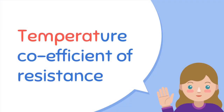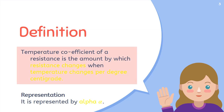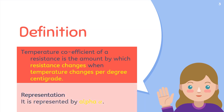Today's topic is temperature coefficient of resistance. The definition says: temperature coefficient of resistance is the amount by which resistance changes when temperature changes per degree centigrade. In simple words, it is the measure of variation of resistance at different temperatures. It is represented by alpha.